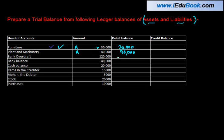Bank overdraft — an overdraft taken from a bank is a liability, because when you take an overdraft from a bank you have to pay it back to the bank. So it's a liability, and a liability has a credit balance.